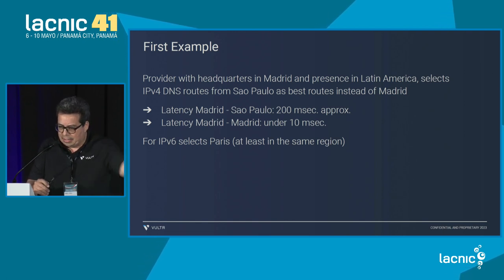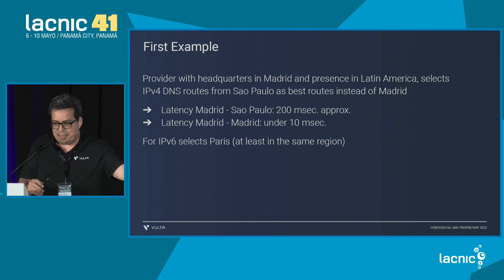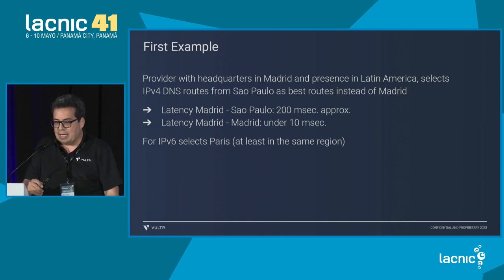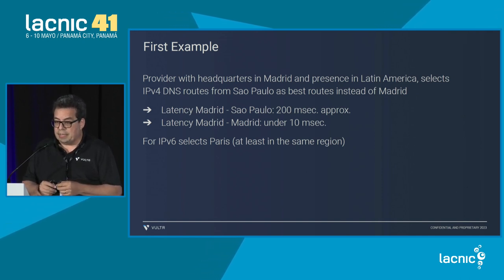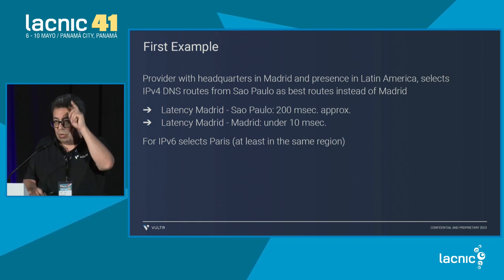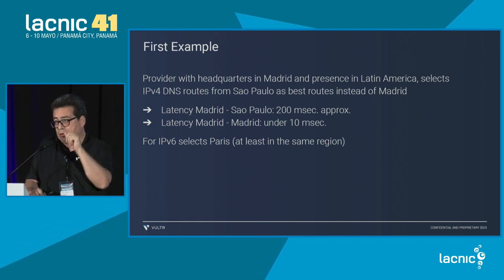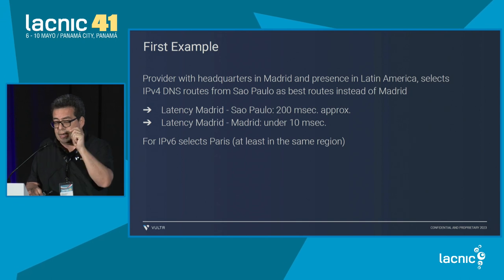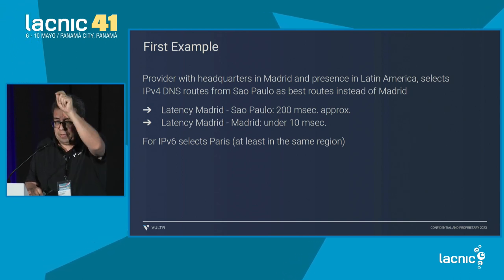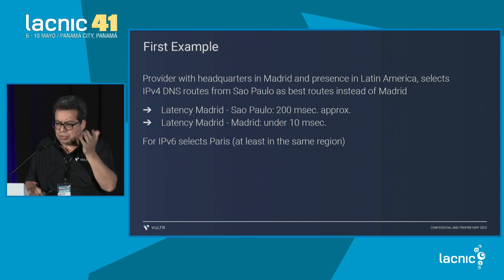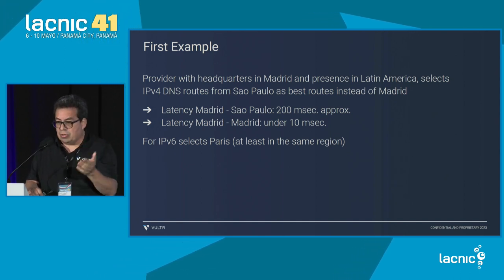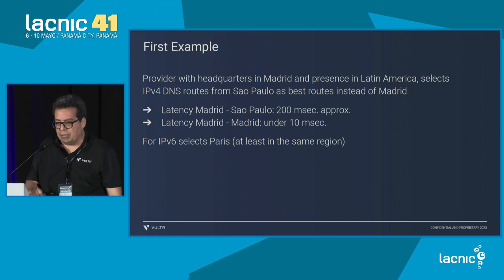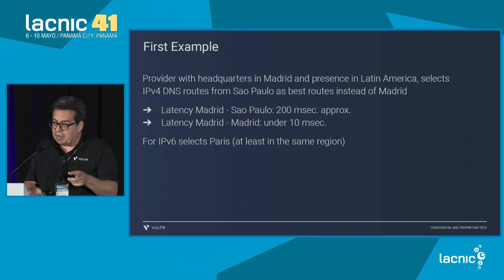Different examples. We have a huge internet service provider in Spain, and instead of going to Madrid for IPv4 DNS, we end up choosing São Paulo. So our DNS clients in this company would go from Madrid to São Paulo, around 200 milliseconds, when the Madrid-to-Madrid latency is under 10 milliseconds.